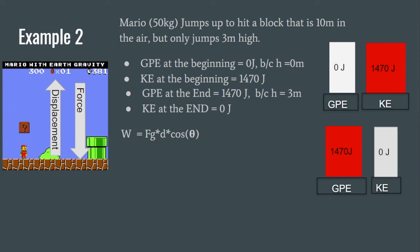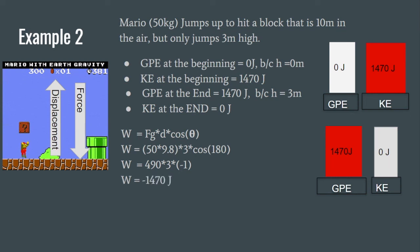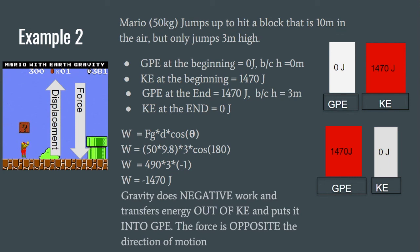Now let's calculate the work. Work = F × d × cosθ, where F is force gravity. Force gravity points down but displacement points up — opposite directions — so the angle is 180°. Plugging in: work = 50 × 9.8 × 3 × cos(180°). Cosine of 180° equals negative one, giving us negative work. Work equals negative 1470 joules. Gravity did negative work, transferring energy out of KE and into GPE. We ended with less KE than we started, confirming negative work.